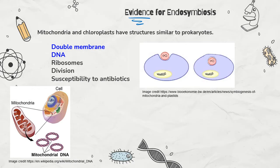First of all, those double membranes around chloroplasts and mitochondria — we think they formed like this: we had the plasma membrane of the host cell, Asgard, and then the bacteria cell. That outer membrane came from the host cell's plasma membrane, and the original membrane of the bacteria cell became the inner membrane. Mitochondria and chloroplasts have both outer and inner membranes.